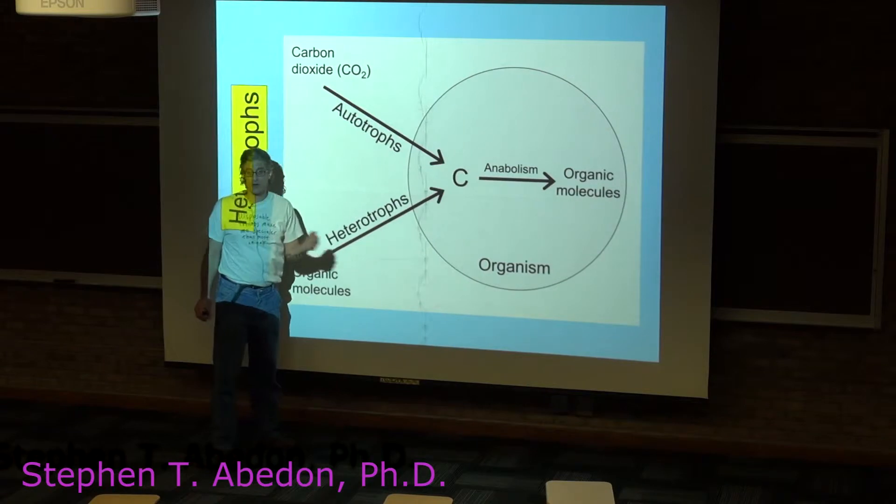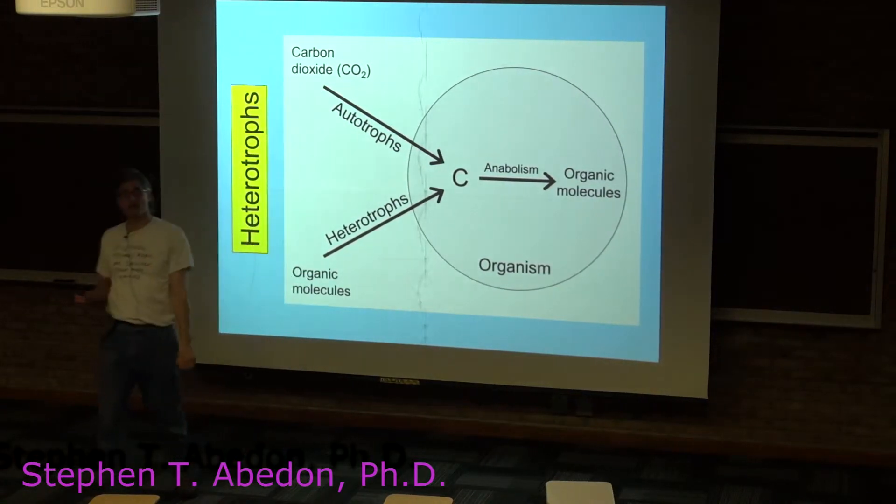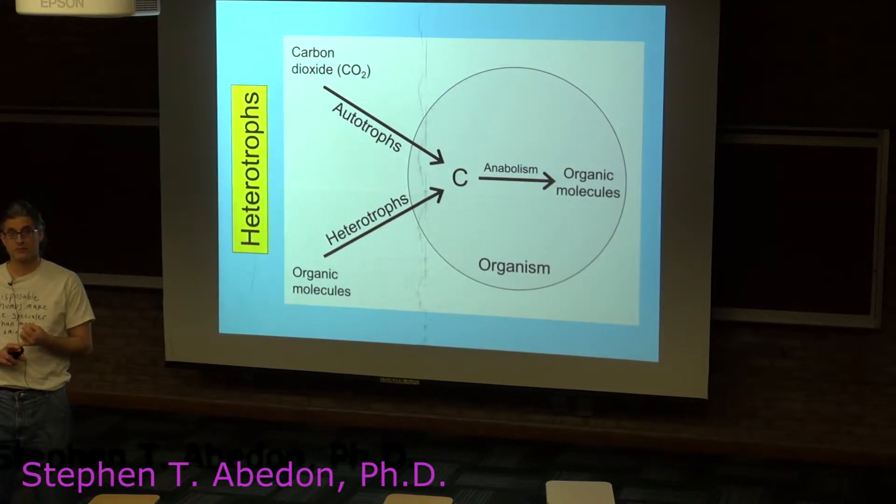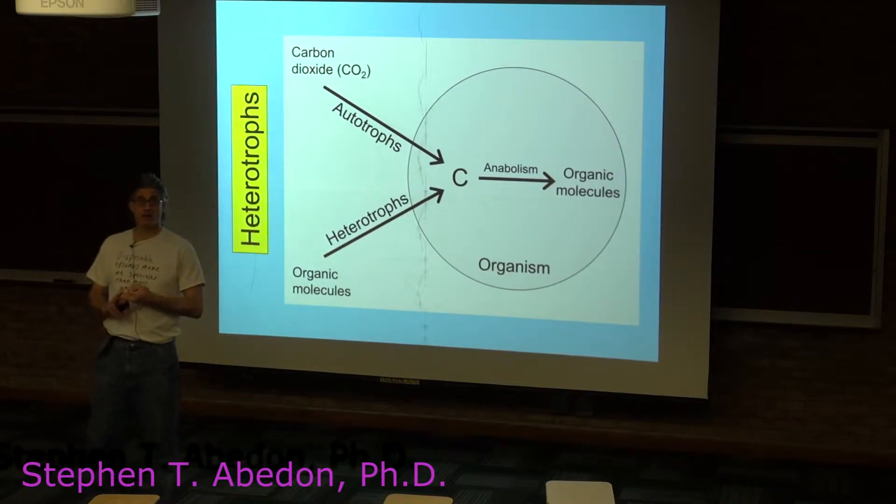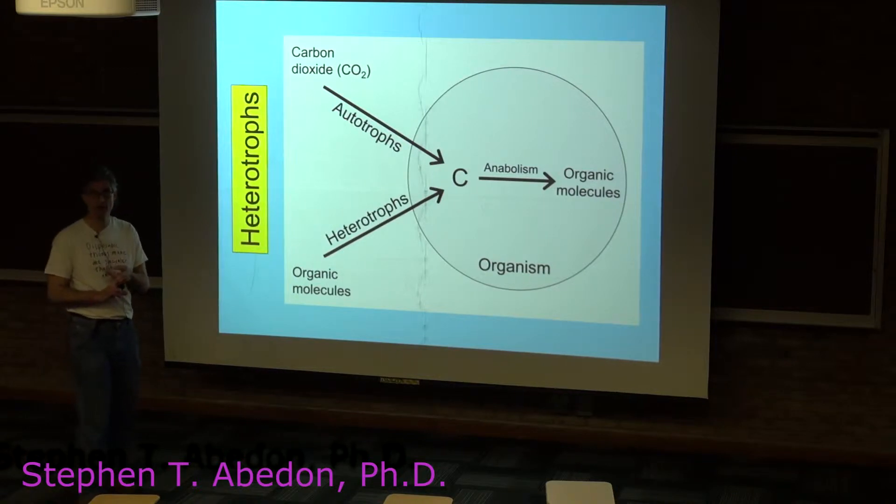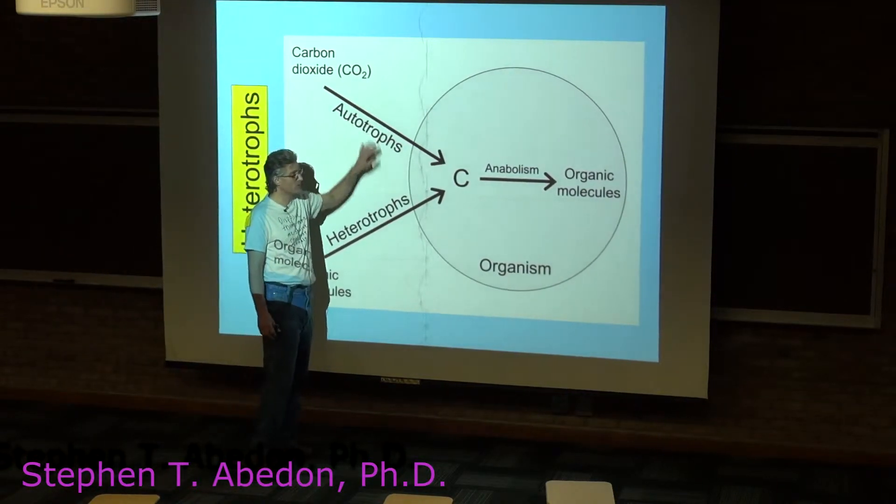The autotrophs are the carbon fixers. These are the organisms that get their carbon from carbon dioxide. So these are the plants, the cyanobacteria, algae, but they're also actually bacteria that are autotrophs without being photosynthetic. Those would be the so-called chemoautotrophs, but most of the autotrophs are photoautotrophs.